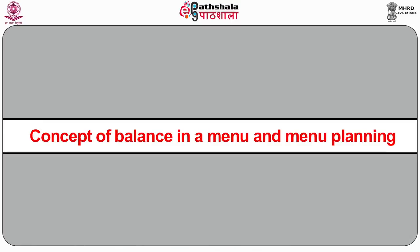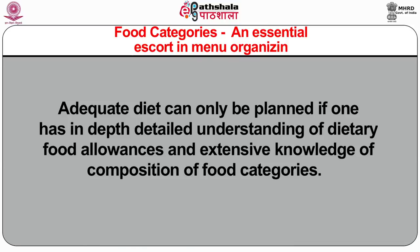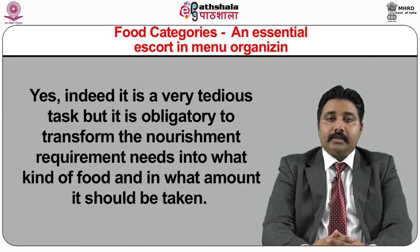The concept of balance in a menu and menu planning relies on food categories as an essential escort in menu organizing. An adequate diet can only be planned if one has in-depth understanding of dietary food allowances and extensive knowledge of the composition of food categories. It is a very tedious task, but it is obligatory to transform nutritional requirements into what kind of food and in what amount it should be taken. This can be done by characterizing and dividing food items into classified brackets called food categories.